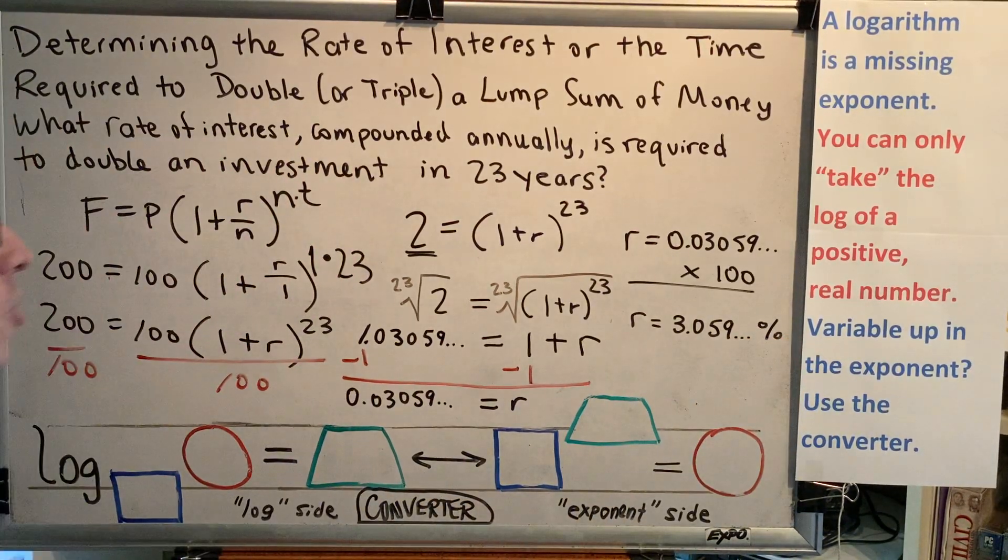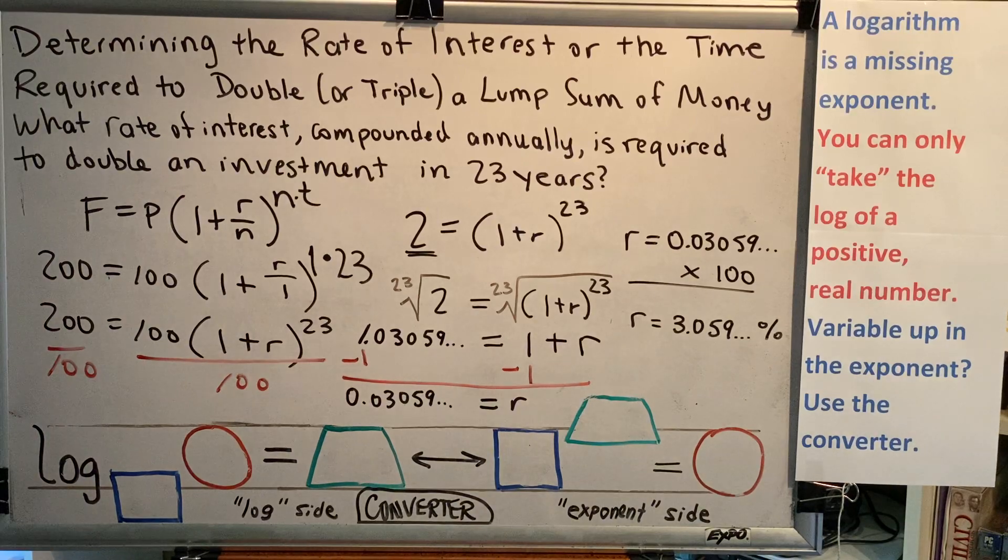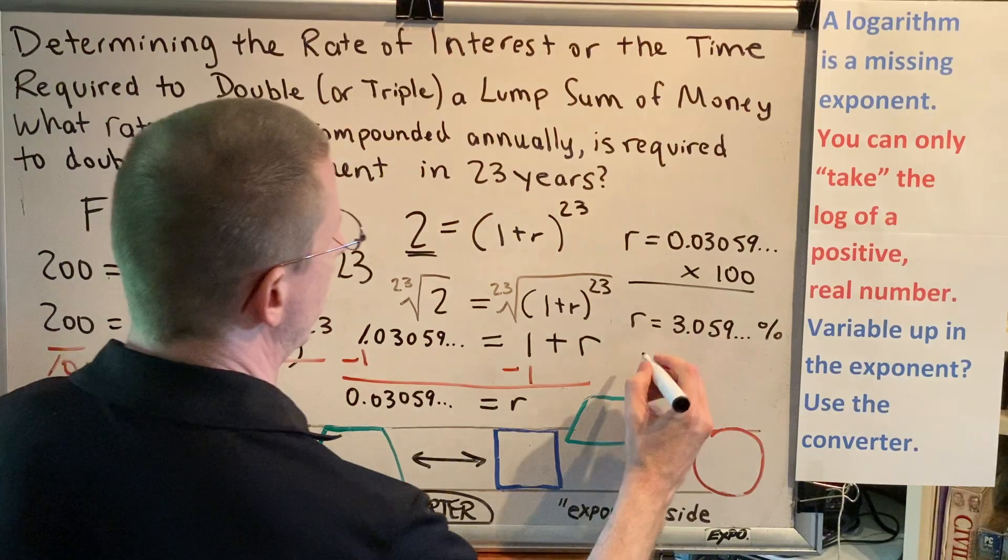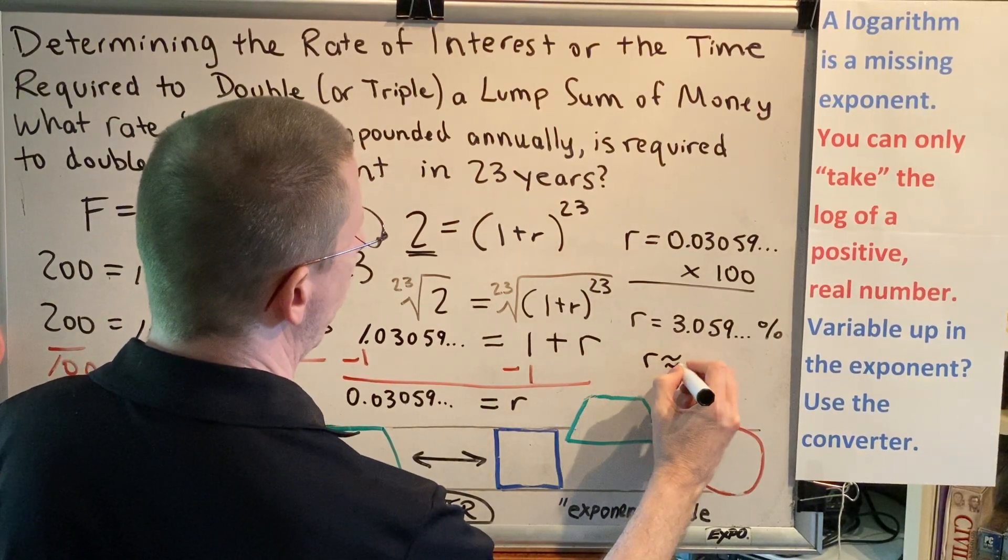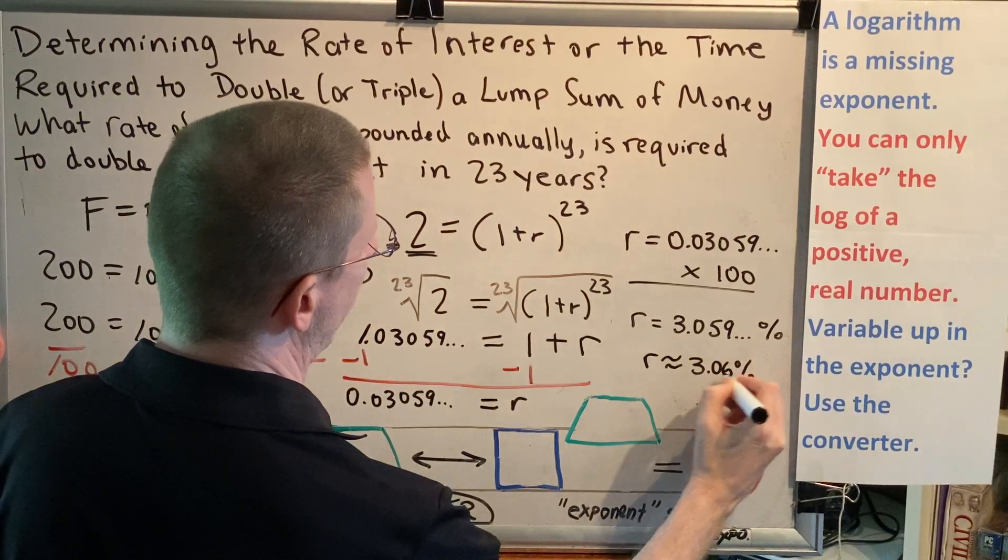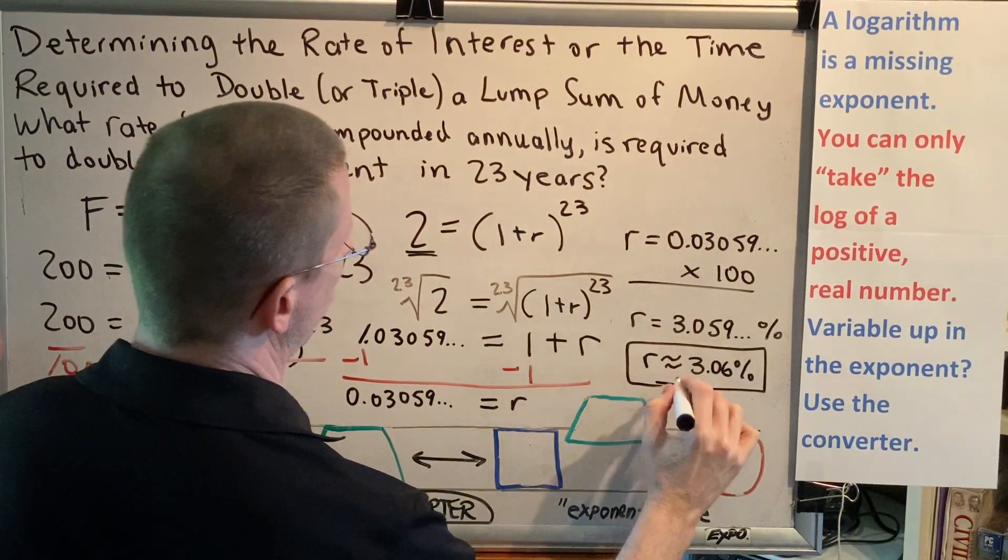Now we use the instructions for the problem that tell us how to round. And let's say in this particular instance, we're told we want two decimal places. Well, then we can say R is approximately equal to 3.06 percent. And that would be the answer to this question.